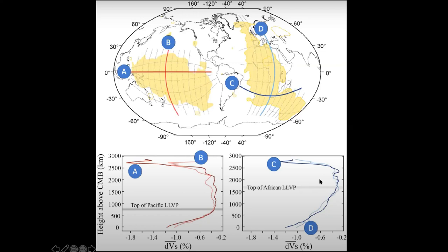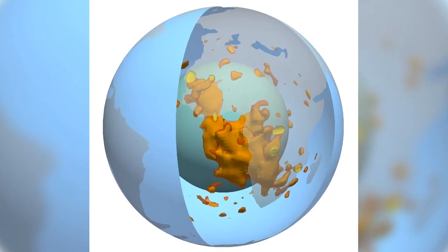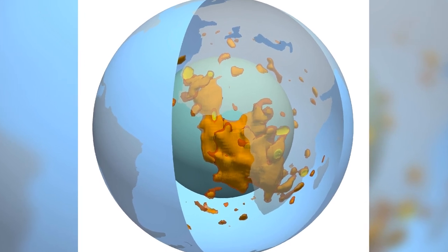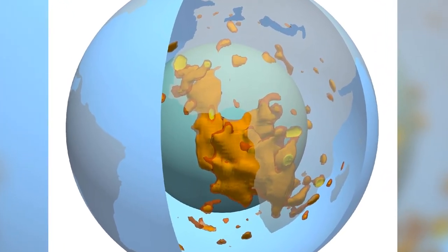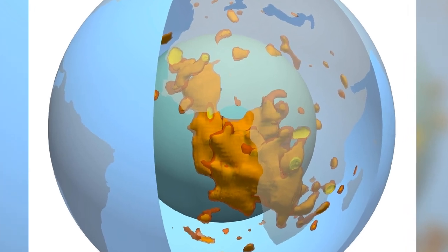These findings may fundamentally change the way scientists think about the deep mantle processes and how they can affect the surface of the Earth. For example, the unstable nature of the blob under the African continent may be related to continental changes in topography, gravity, surface volcanism, and plate motion.